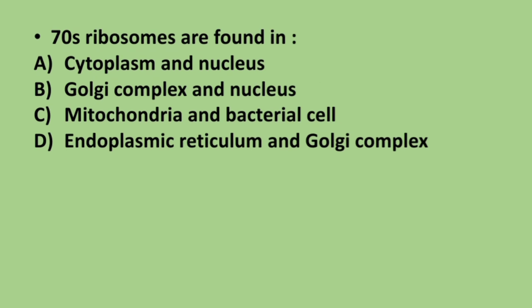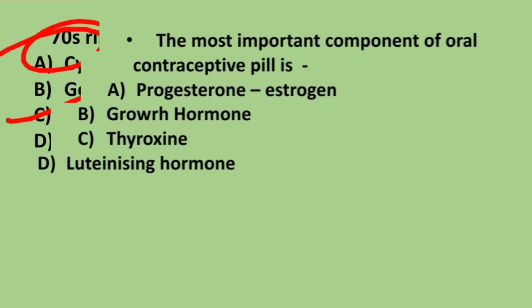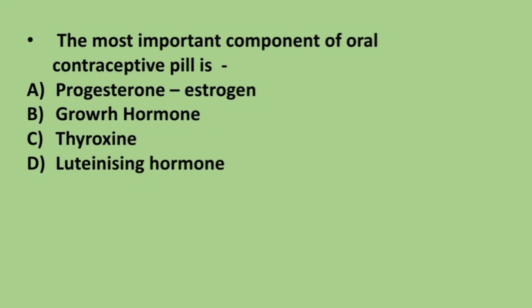Next question: 70S ribosomes are found in — cytoplasm and nucleus, Golgi complex and nucleus, mitochondria and bacterial cell, or endoplasmic reticulum and Golgi complex? The correct answer is option C, mitochondria and bacterial cells. The 'S' stands for sedimentation coefficient.